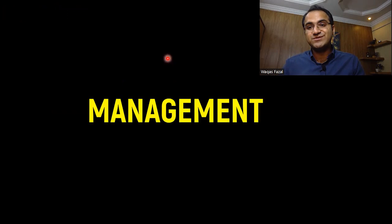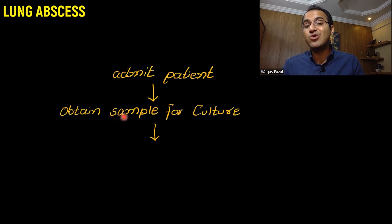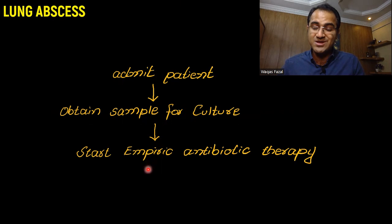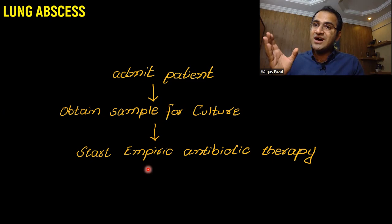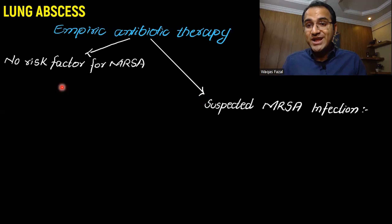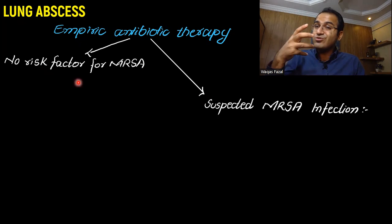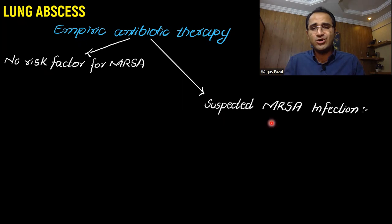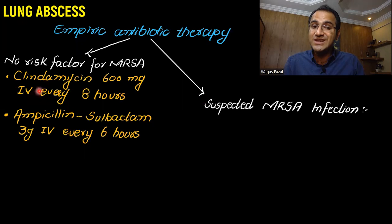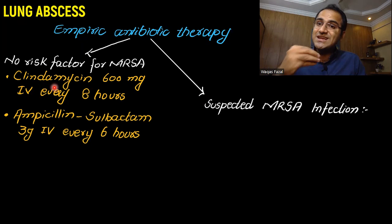Coming to the management of lung abscess: if a patient presents with lung abscess, you need to admit the patient, obtain samples for cultures, and start empiric antibiotic therapy. Lung abscess is one of the abscesses in the body that can be easily treated with antibiotic therapy if it is not very large or complicated. You need to check for risk factors for MRSA. If there are no risk factors, clindamycin is the most important drug — it kills the anaerobic bacteria causing lung abscess due to aspiration.